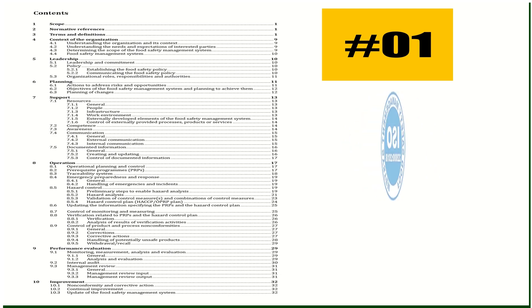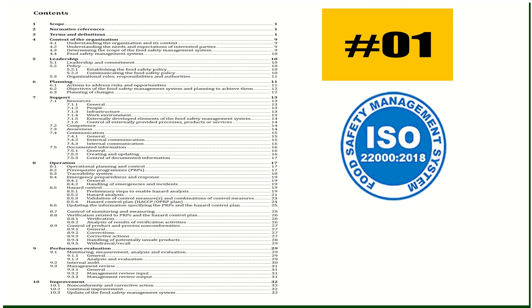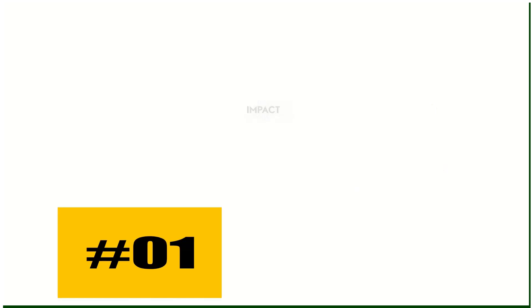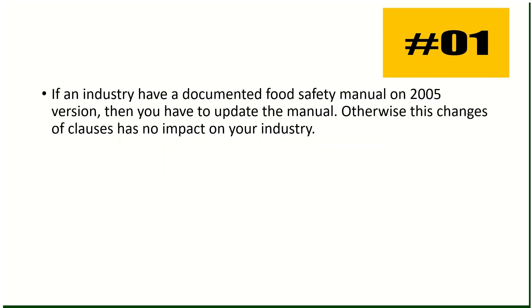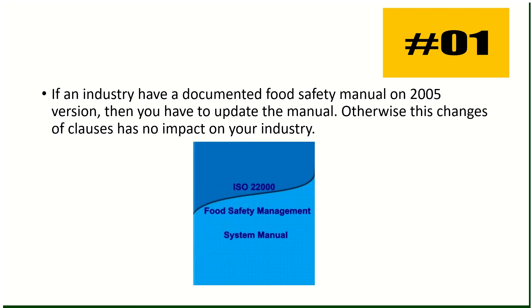What is HXSL? We will cover that in another video. For now, remember the new ten major clauses: scope, normative reference, terms and definition, context of organization, leadership, planning, support, operation, performance evaluation, and improvement. Impact of change number one: if an industry has a documented food safety manual based on the 2005 version, the organization has to update the manual; otherwise this change has no impact.